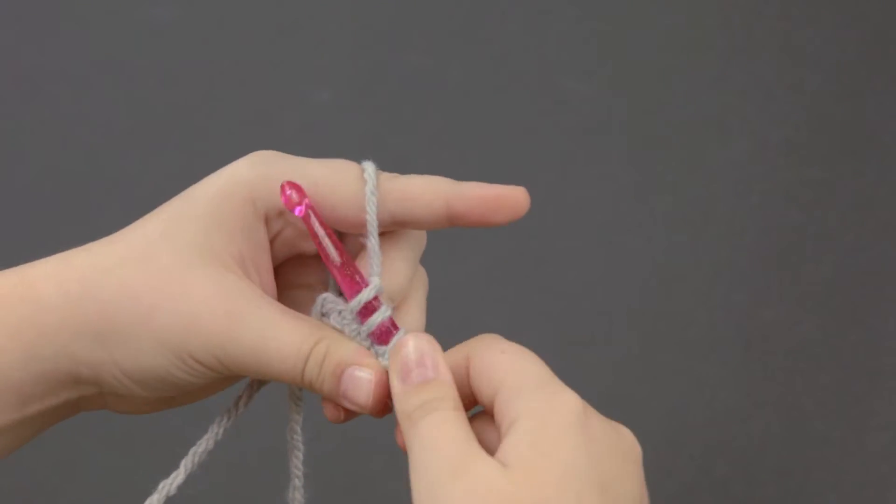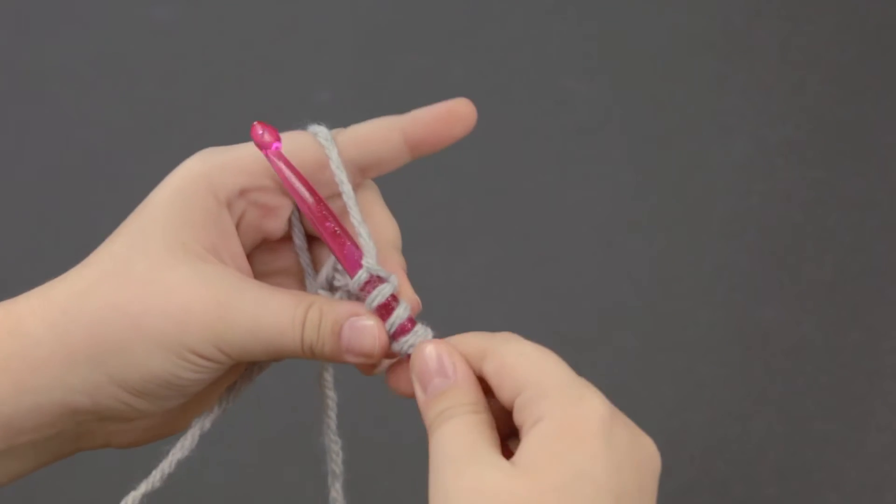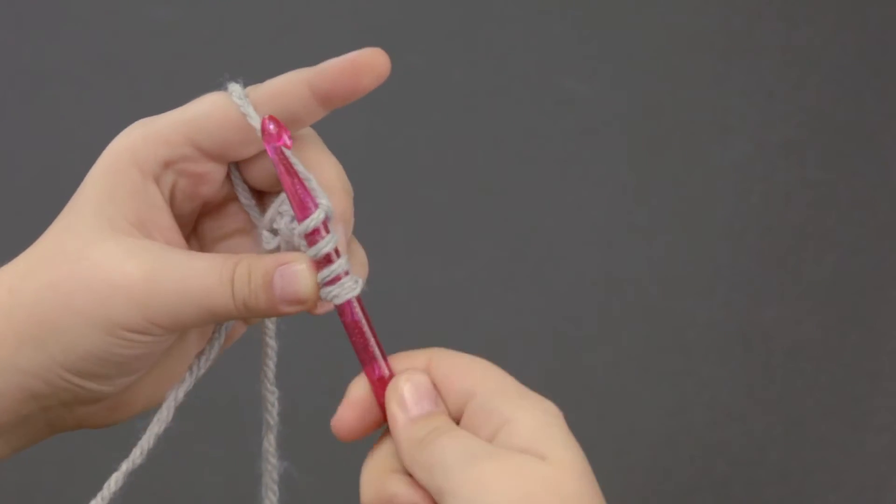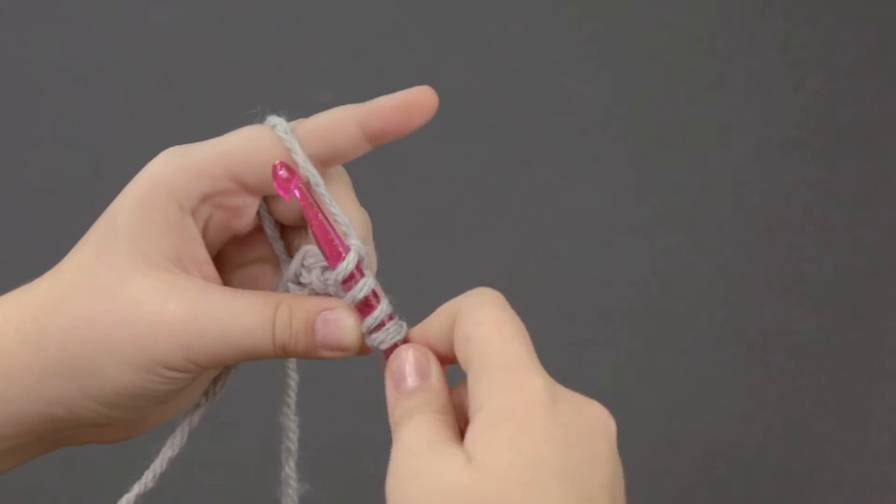And if it does get really tight, just move it up and down the body of your nook to loosen it. It's not fun working with tight stitches.